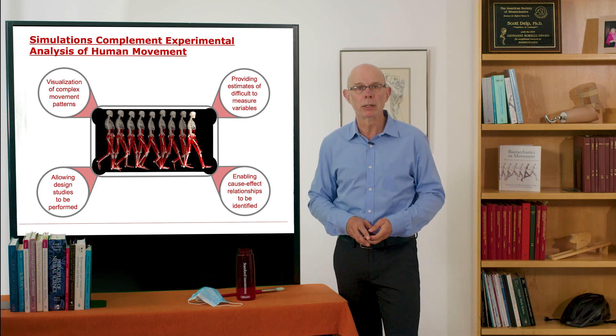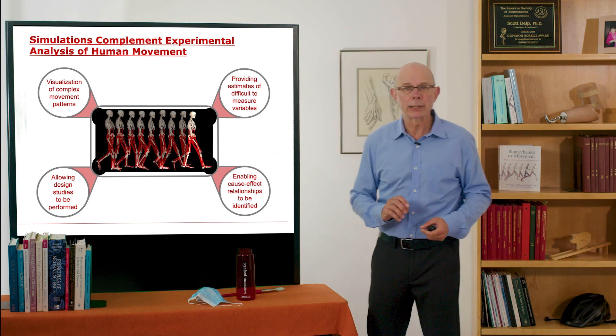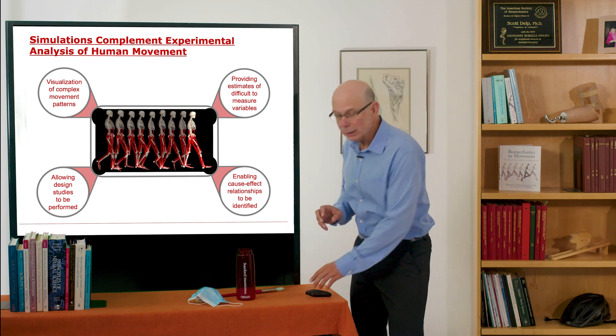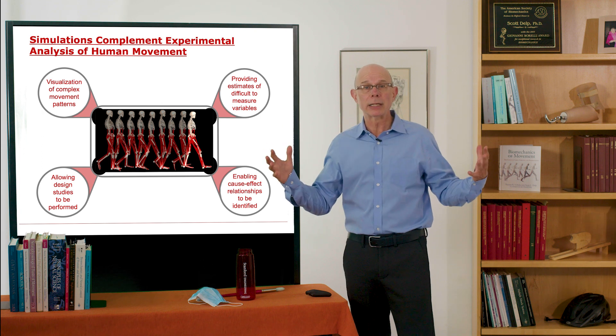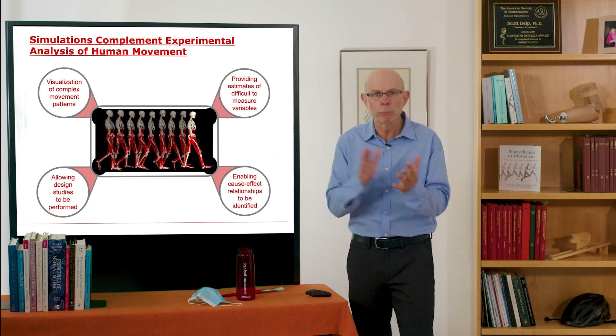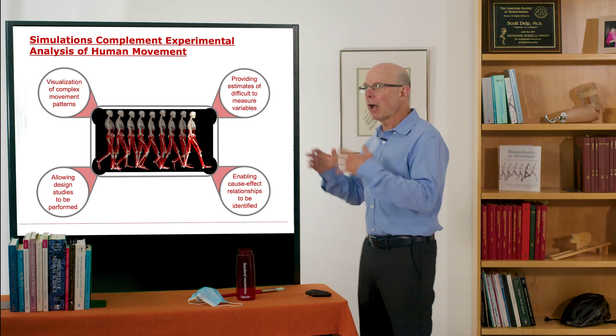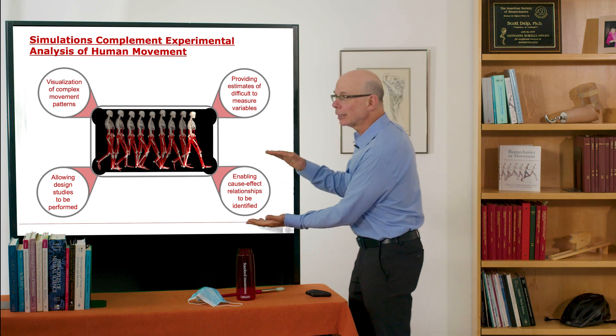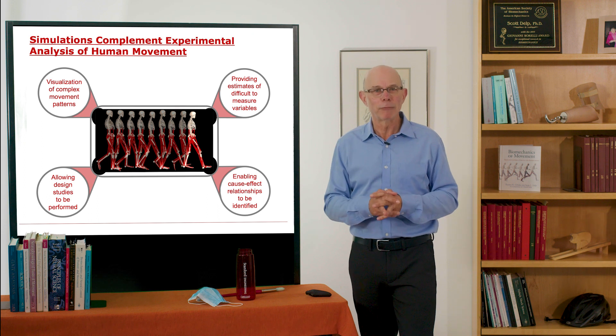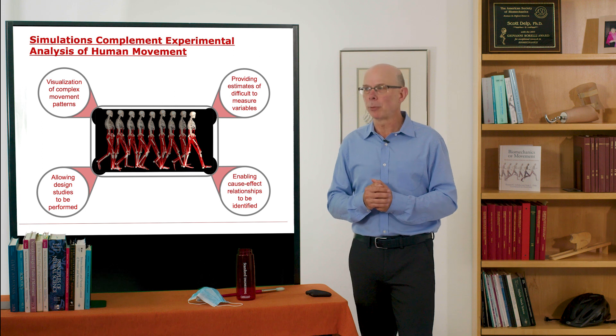Third, simulations enable cause-effect relationships to be identified. Remember I said we couldn't tell if I get EMG in one muscle what it's doing to the rest of the body. If I'm trying to diagnose a movement disorder and I see abnormal EMG activity and I don't know what motions that causes, if I have a simulation of that movement, it lets me establish cause-effect relationships. That is super important. If you're doing science and you can't establish cause and effect, you're kind of lost. But simulations help you do that.